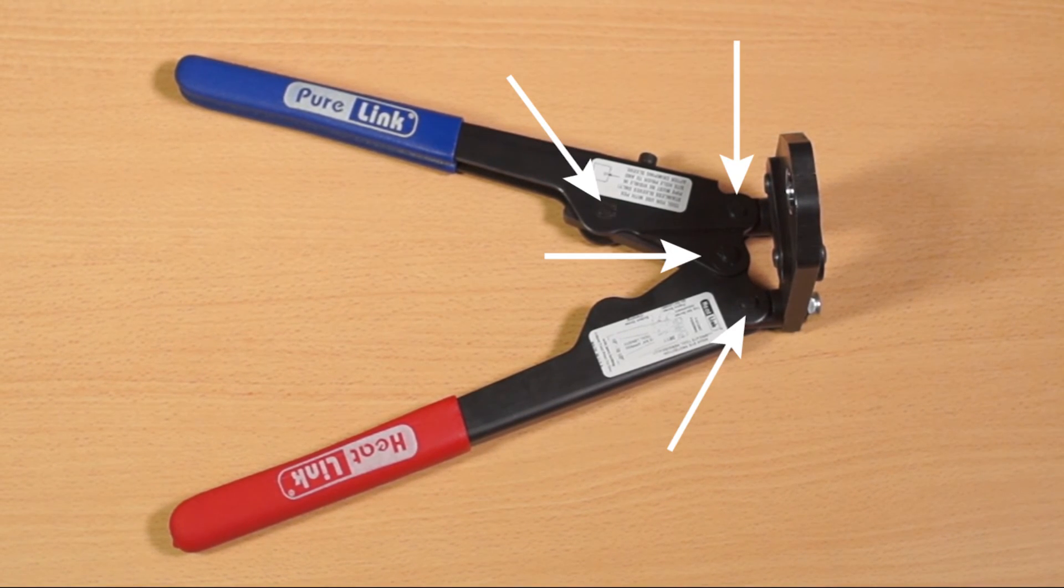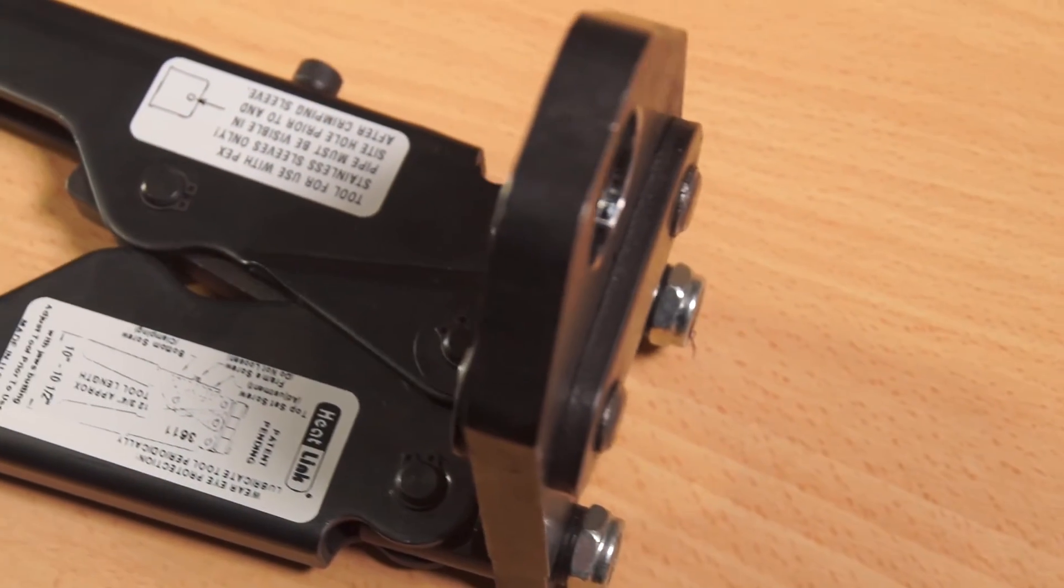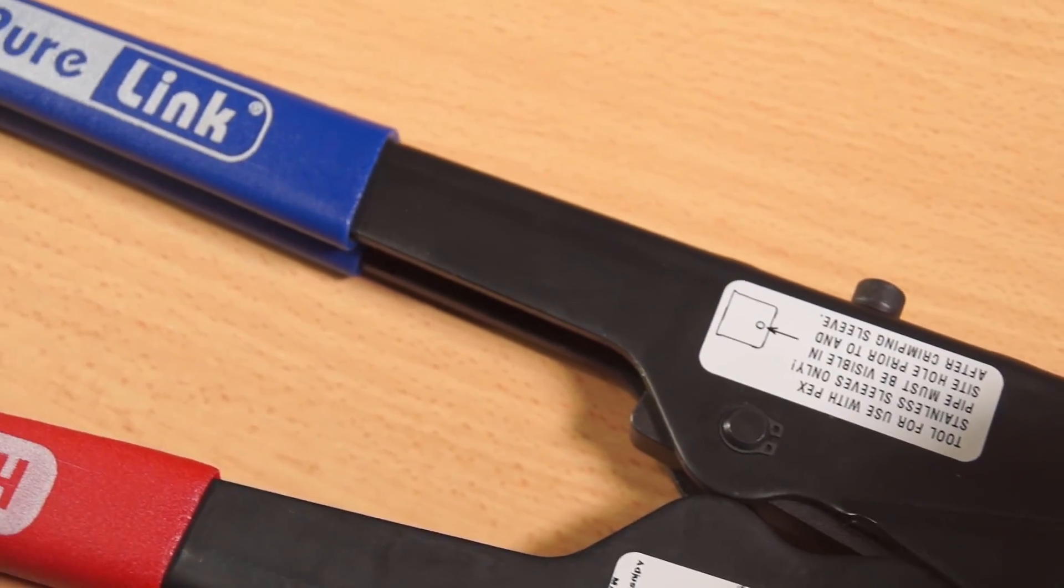Regular inspection and lubrication of the press tool's joints and pivot points is also important in helping ensure proper presses. Your press tool is now properly calibrated and ready to be put back into service.